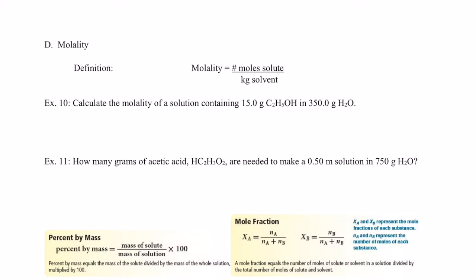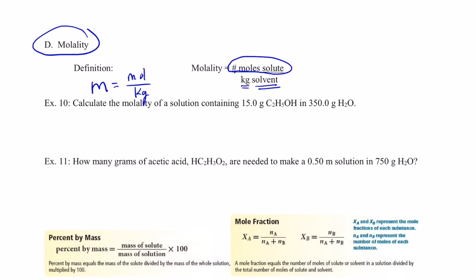With molality, the numerator is the same as it was for molarity — we have moles of solute on top. However, the denominator is kilograms of solvent. Remember, with molarity it was moles of solute per liter of solution; molality is moles of solute per kilogram of just the solvent. The symbol for molality is the small letter m, so molality equals moles per kilogram.